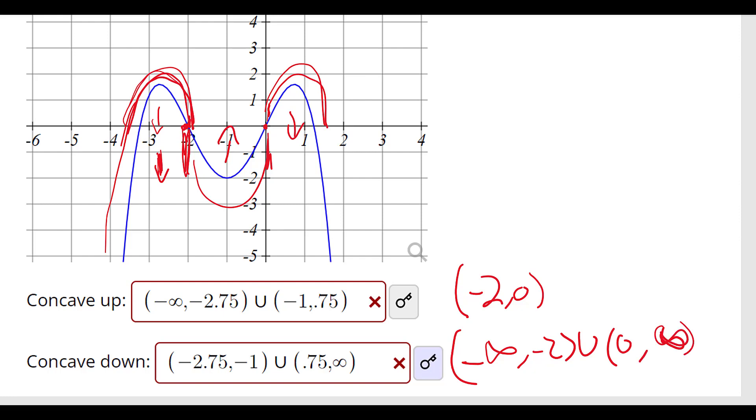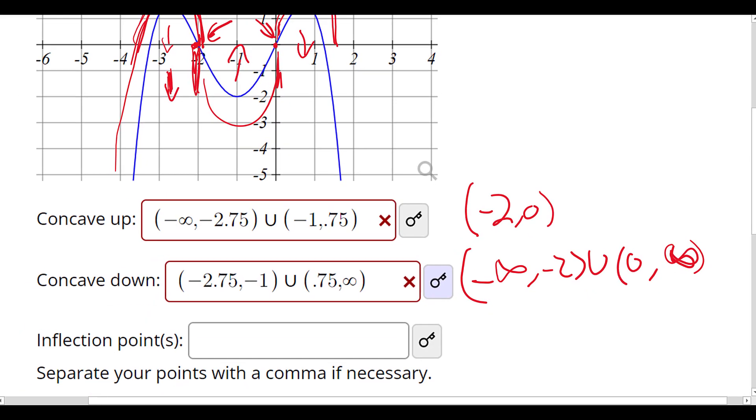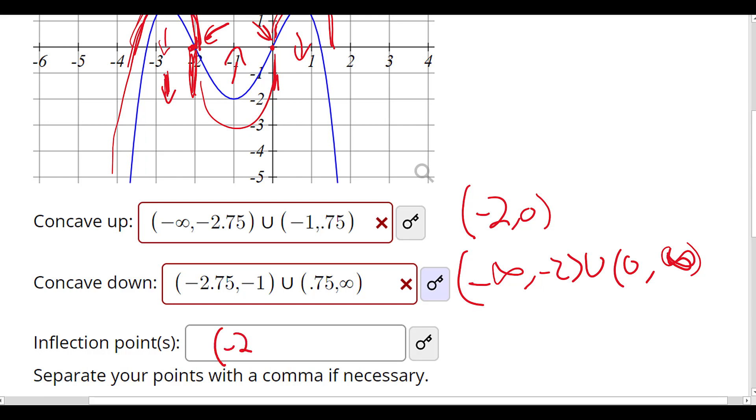And then inflection points—these inflection points are going to occur, there we go, here and here. So the inflection points are going to be at negative 2, 0 and 0, 0, those inflection points.